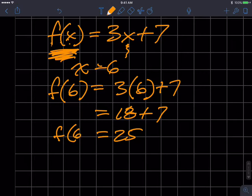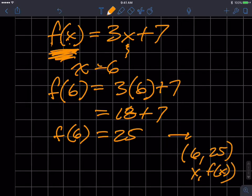So f of 6 is equal to 25. You could also then say my ordered pair for 6 is 6, 25, which is a representation of that kind of thing. These are all the ordered pairs. This is one specific ordered pair.